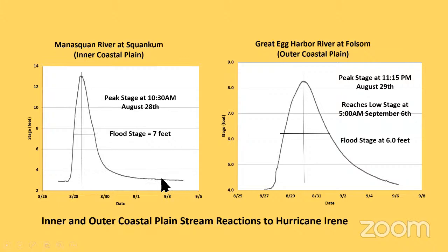In the outer coastal plain, the storm hit but it didn't really start to affect the stream until the next day — there was a lag time. The water came up, but if you look at the numbers, it's not as high — a much more modest rise. And then it took a lot longer to go back down to what it had been. Outer coastal plain streams lag behind the storm, rise relatively modestly, and decline relatively slowly.